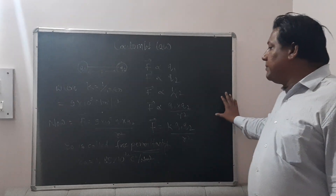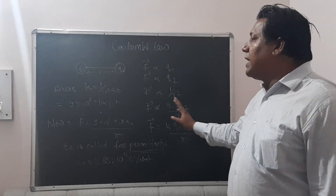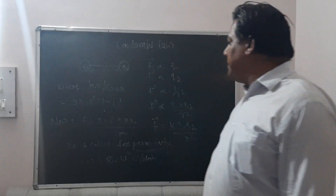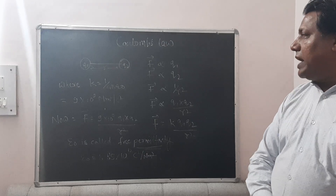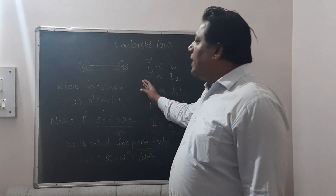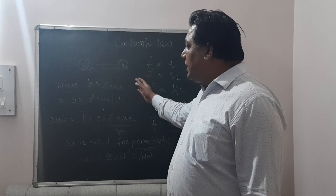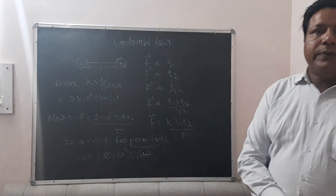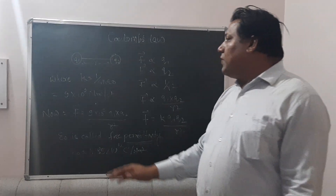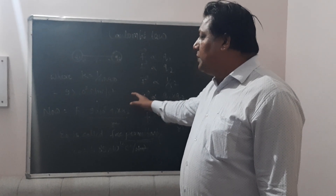Now we can find the value of k. According to Coulomb, the value of k is 9 × 10⁹ N·m²/C², and it always remains constant. Since the value is so large, the force between two charged particles is also very large. Therefore, the charge on a system is always kept very small — if we had one full coulomb of charge, we could not separate the particles because the force between them would be enormous.